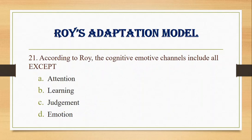Number 21. According to Roy, the cognitive emotive channels include all EXCEPT: A. Attention, B. Learning, C. Judgment, D. Emotion. Answer: A. Attention.